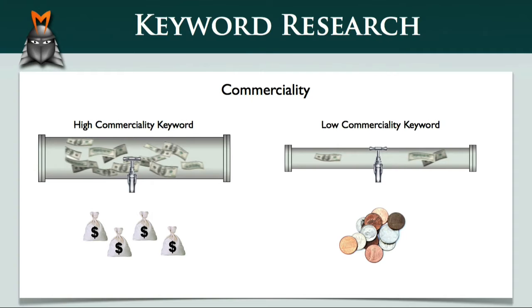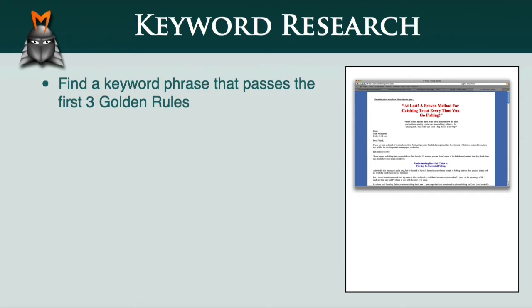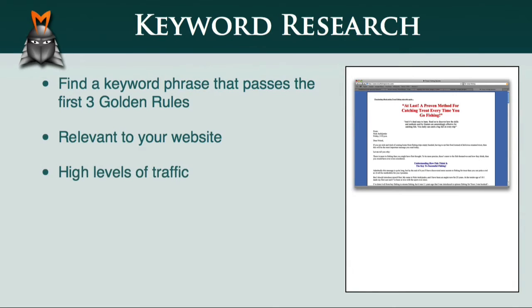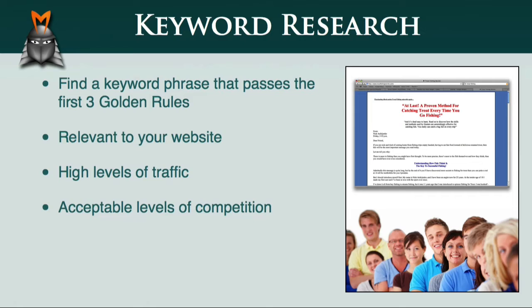Here's why the concept of commerciality is so important. Imagine that after setting up your website, you do some keyword research and find a keyword phrase that passes the first three golden rules — it is relevant to your site, it has high levels of traffic, and it has an acceptable level of competition. You then optimise your website for this phrase and manage to obtain the number one spot in Google. As a result, your website attracts a large number of visitors each day. The only problem is that no one seems to be interested in buying anything. One reason for this is that you may have unintentionally targeted a phrase that has a low level of commerciality.